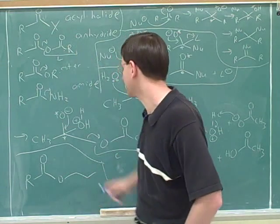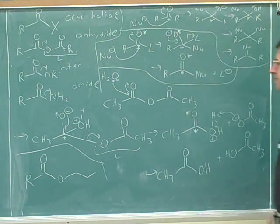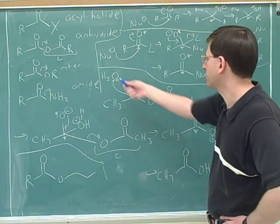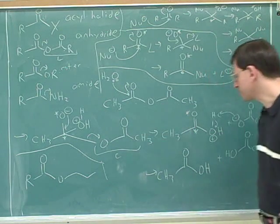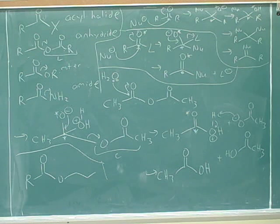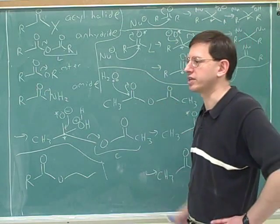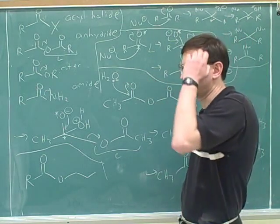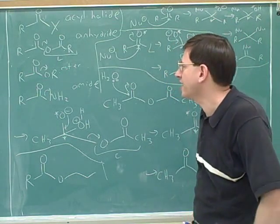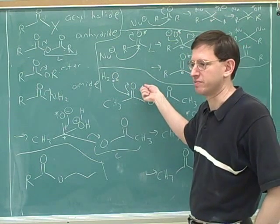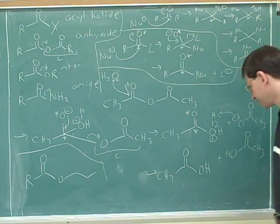We want to give different names to things with different reactivity. To finish off this reaction: we attacked an anhydride with water. What types of functional groups did we end up with? Two carboxylic acids. Anhydride plus water gives you two carboxylic acids. You really shouldn't have to memorize that—you should be able to figure it out by going through the mechanism.